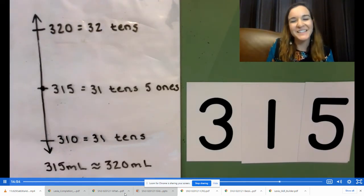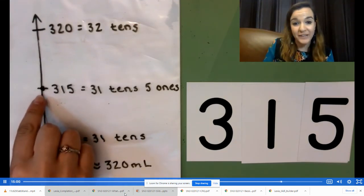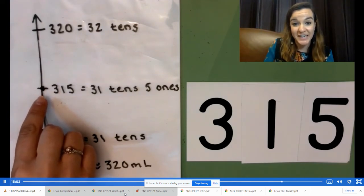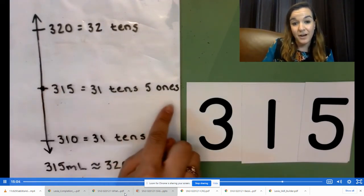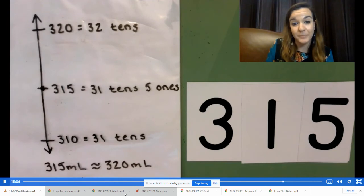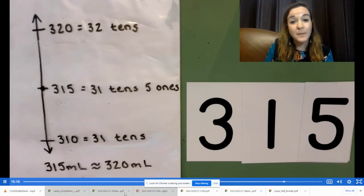Go ahead and check your work against my work. You notice that I have a point next to 315, which is also our halfway point on our vertical number line. Remember the convention in mathematics. When the number you are rounding is the halfway point, you round up. So in this case, 315 milliliters is about 320 milliliters.